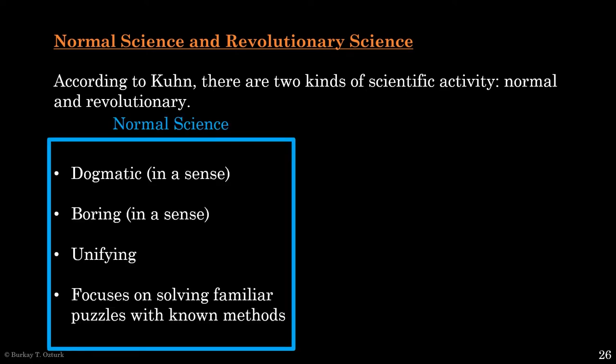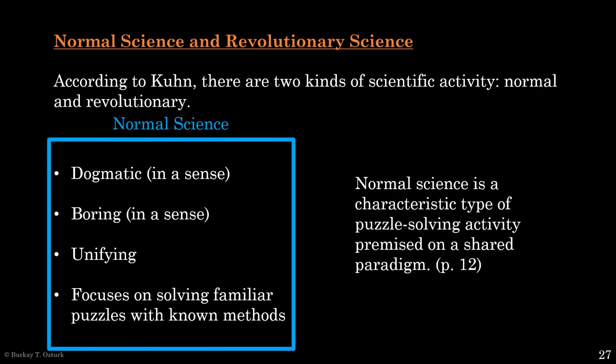Normal science, as the name suggests, is just normal. It is the most common form of scientific activity. It is also somewhat dogmatic, somewhat boring, and ideologically unifying. Normal science focuses on solving familiar puzzles with known methods. Kuhn says normal science is a characteristic type of puzzle-solving activity premised on a shared paradigm.